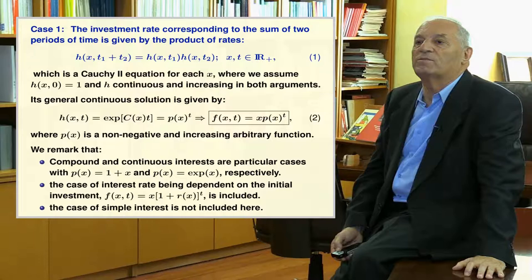The general continuous solution is given by expression 2, where p is a non-negative and increasing arbitrary function. We remark that compound and continuous interest are particular cases with p(x) equal to 1+x and e^(dx) respectively, as well as the case of interest rate being dependent on the initial investment. Note, however, that the case of simple interest is not included here.